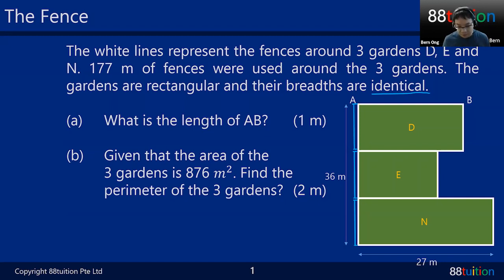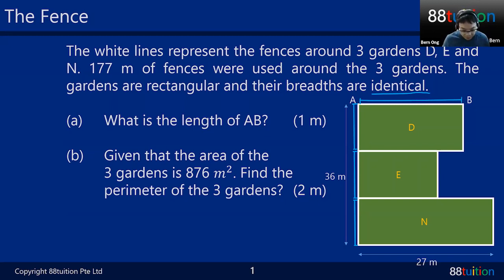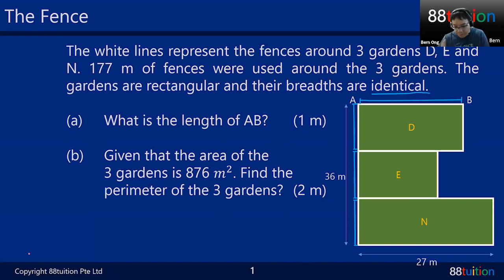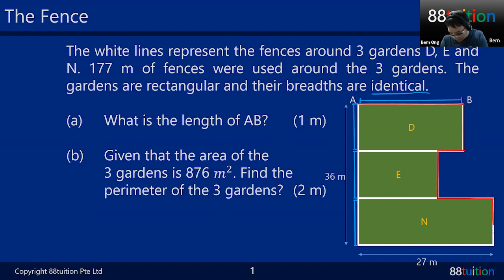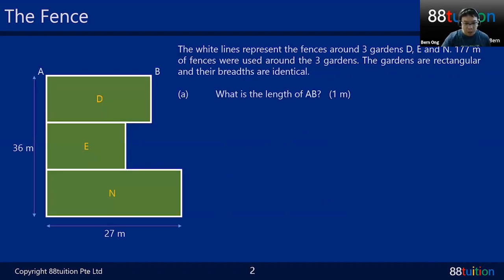Since the breadths are identical, 36 divided by 3 gives you 12. What is the length of AB? That's the first part. Also given that the area of the three gardens is 876, find the perimeter. The perimeter means the outline — here, here, and here — the red color. It does not include the internal fence lines.